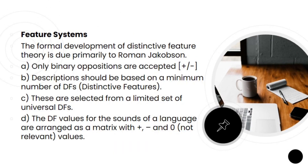Feature Systems. The formal development of distinctive feature theory is due primarily to Roman Jacobson. He formulated that only binary oppositions are accepted — plus and minus signs. Descriptions should be based on a minimum number of distinctive features. These are selected from a limited set of universal distinctive features. The DF values of the sounds of a language are arranged as a matrix with plus sign, minus sign, and zero, or not relevant values.